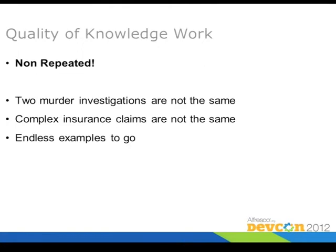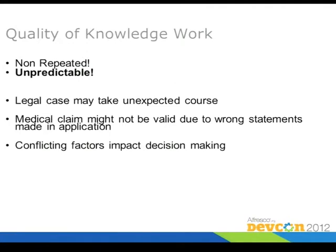This is important when it comes to implementing workflows — if something is not repeatable, it's not necessarily a good thing to automate. Another thing about knowledge work is that it is unpredictable. There might be cases where you can anticipate certain things, but you never know what is really going to happen. If it's a legal case, maybe there are new findings which turn the whole thing around — maybe Samsung will win over Apple in their patent war. Medical claims might not be valid because of a wrong statement in the application. Knowledge work is non-repeatable and somehow unpredictable.